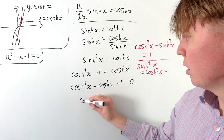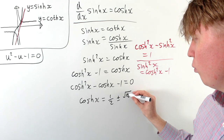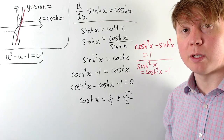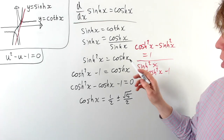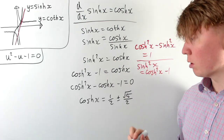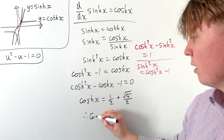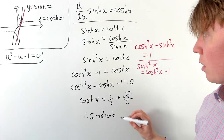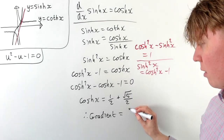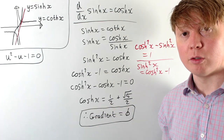Once again, hyperbolic cos x — our gradient — equals a half plus or minus root 5 over 2. We need to eliminate the negative solution: since hyperbolic cos x equals hyperbolic sine squared x, it must be positive. So hyperbolic cos can't take the negative root, and the gradient is indeed equal to the golden ratio: one half plus root 5 over 2.